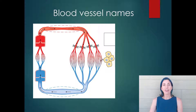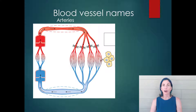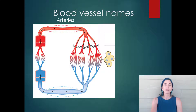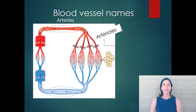We name blood vessels by their approximate position relative to the ventricles. A blood vessel taking blood away from the ventricle is called an artery. The closer you are to the heart, the larger the diameter — the largest arteries are closest to the heart. As arteries move away and branch, they decrease in diameter until you reach a very small artery no longer called an artery but an arteriole. Arterioles are like tiny arteries — about one one-hundredth the diameter of the biggest arteries — and they bring blood into the capillaries.